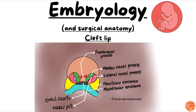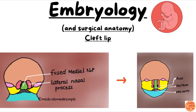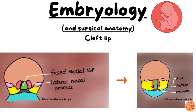Let's talk about the embryology first. At about five weeks of gestation, a structure called the nasal placode gets converted into the nasal pit. Around the nasal pit, two processes form — the medial nasal process and the lateral nasal process. There are also two other eminences: the maxillary eminence and the mandibular eminence. The two medial nasal processes grow towards the midline and fuse to form a single fused medial nasal process. This fused medial nasal process fuses with the maxillary eminence to form the upper lip, while the two lateral nasal processes form the ala of the nose.